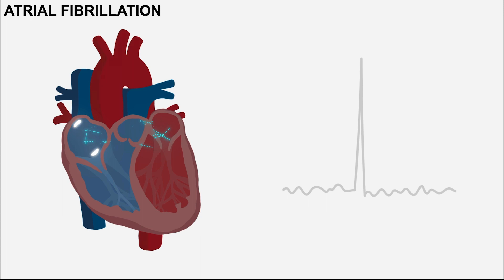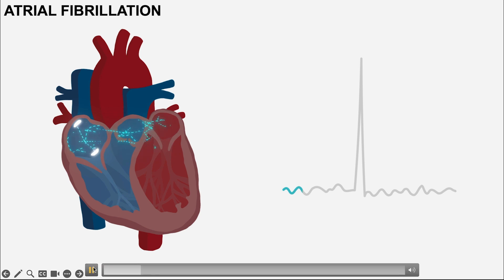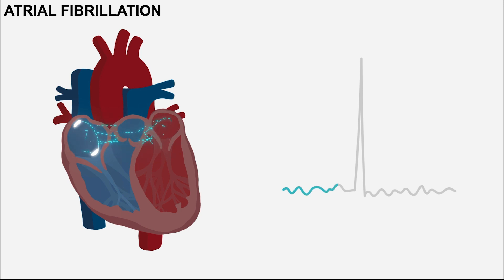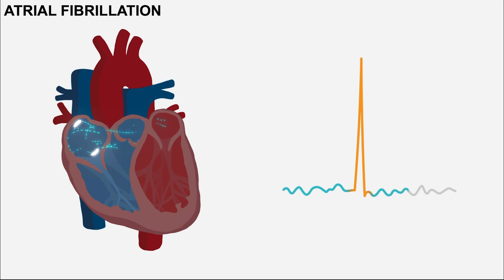Atrial fibrillation is characterized by rapid and chaotic atrial electrical activity. Though the SA node is responsible for initiating the electrical activity of the heart, other cardiomyocytes are also capable of generating an electrical impulse. In AF, the cardiomyocytes of the atria are in an excited state where they are firing in a disorderly fashion. This means that no discernible P waves are generated, and instead you have a fibrillatory baseline denoting the chaotic electrical activity.